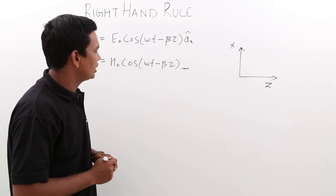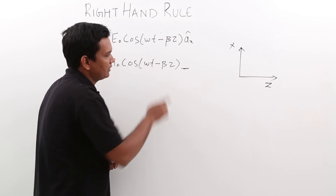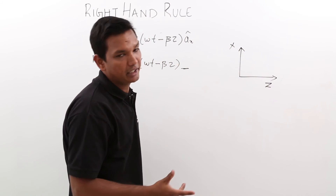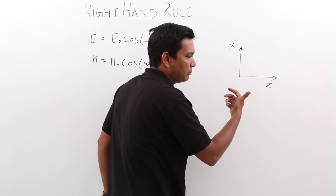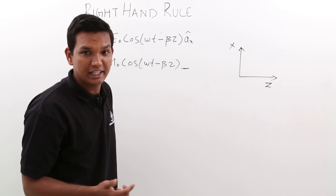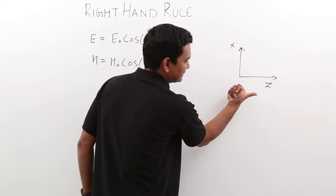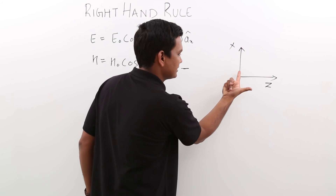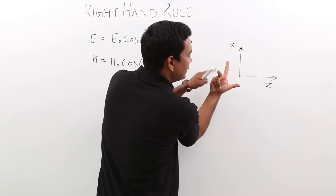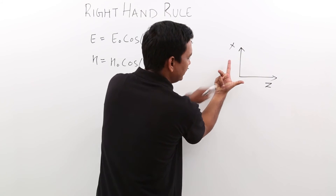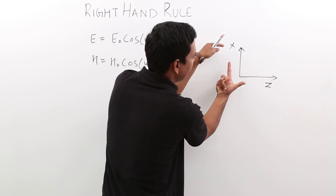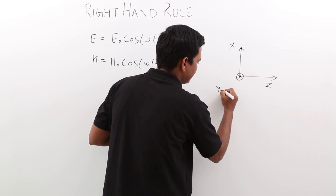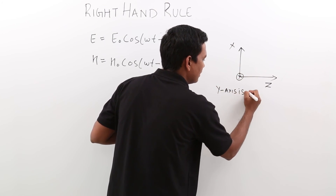Let us understand this. I know that this is my z and this is my x — where would my y be pointing? Let us see by the right hand rule. My thumb should point in the direction of the z-axis, and my forefinger should point in the direction of the x-axis. If I do this, my middle finger is pointing outward. So the y-axis is out of the board.